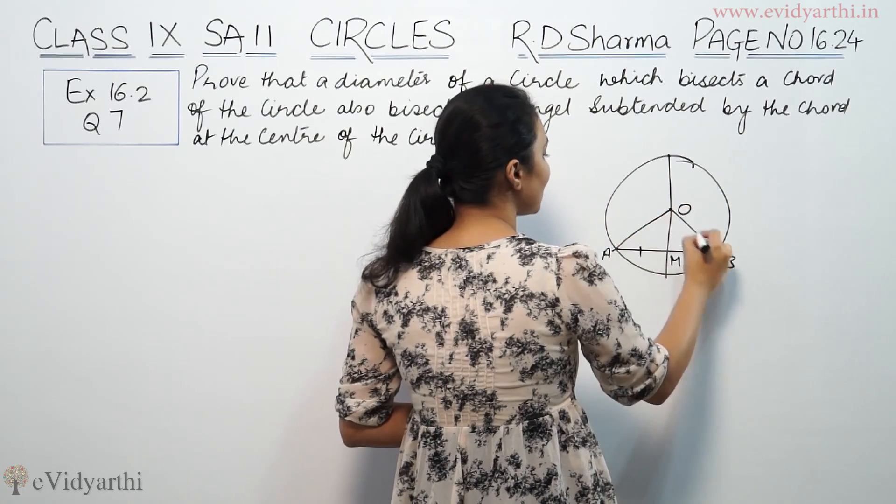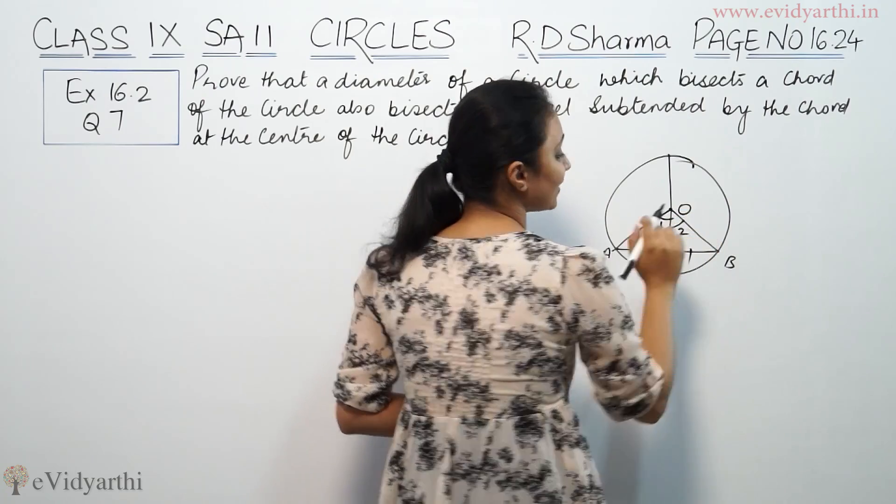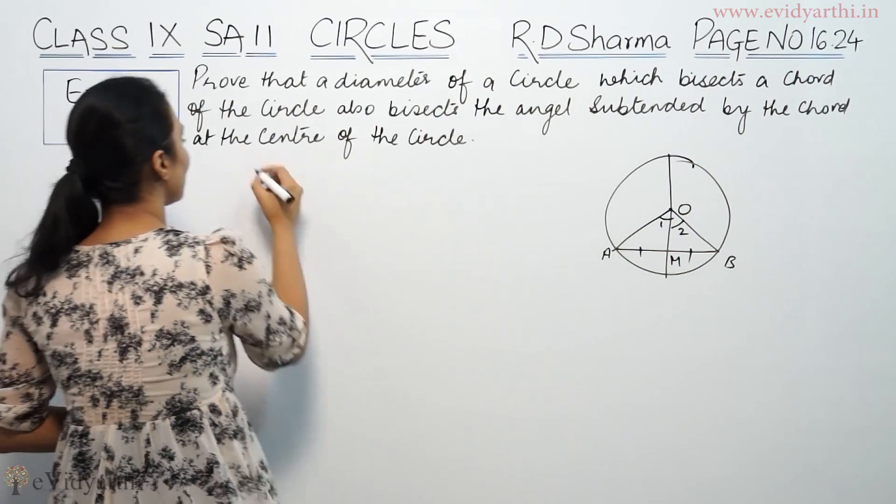We have to prove that the angles are equal at the center of the circle. In this case, we have angle 1 equal to angle 2.